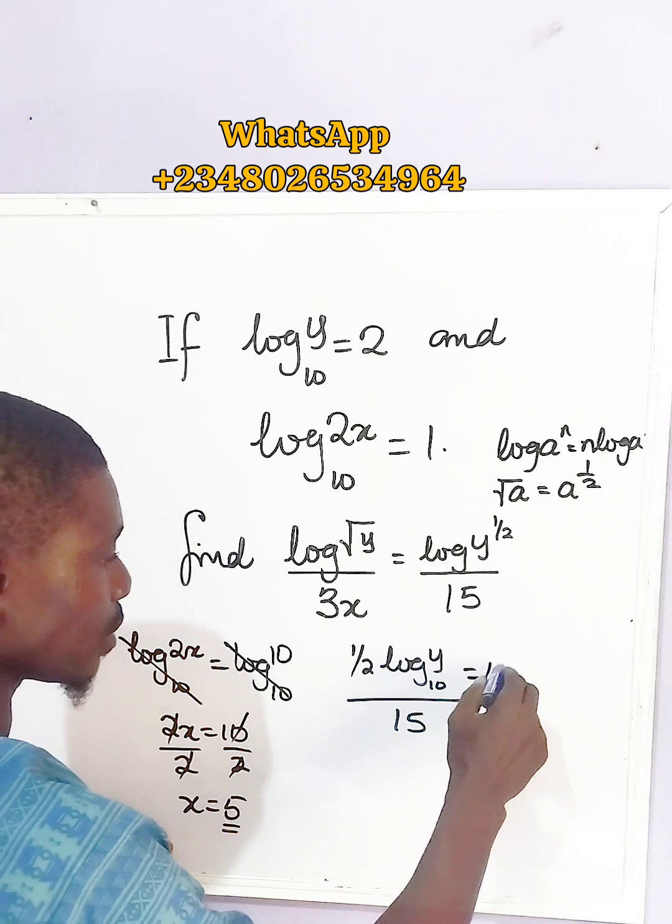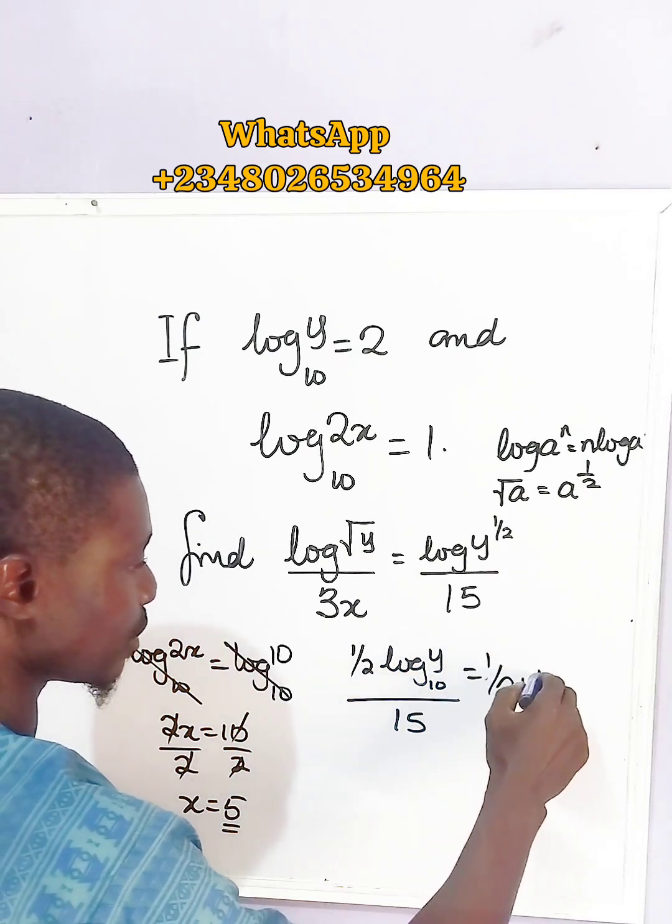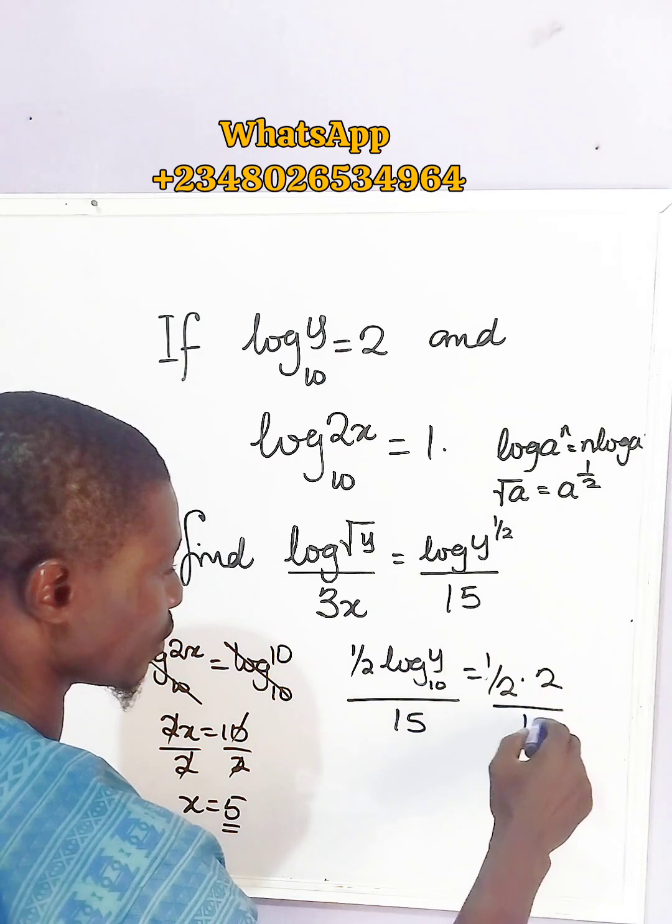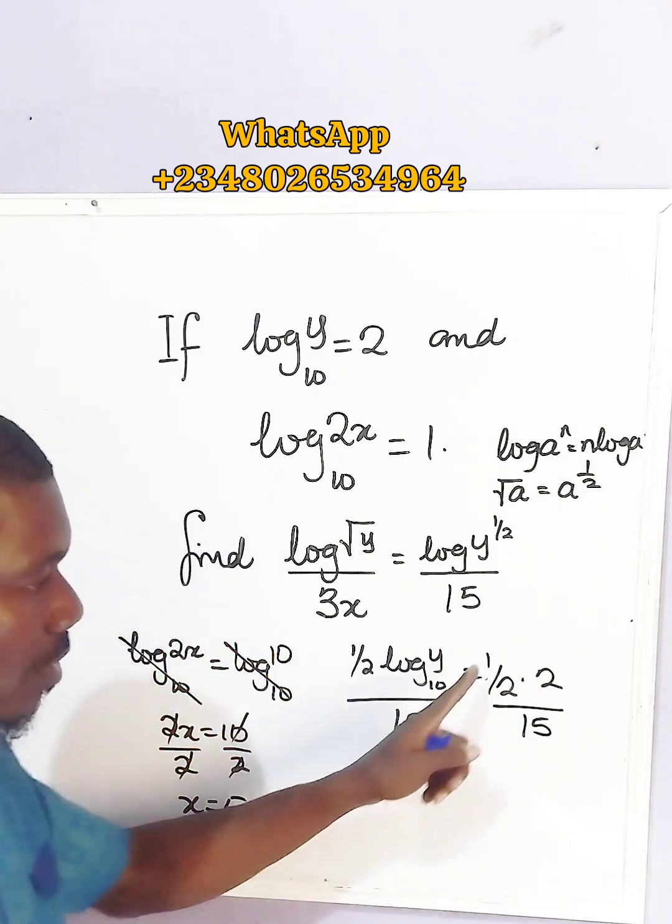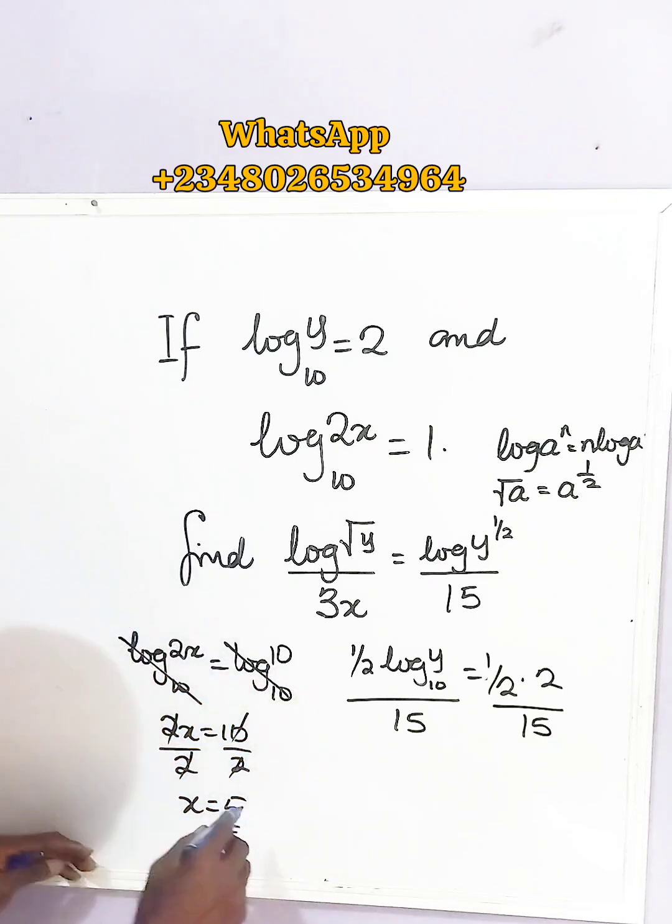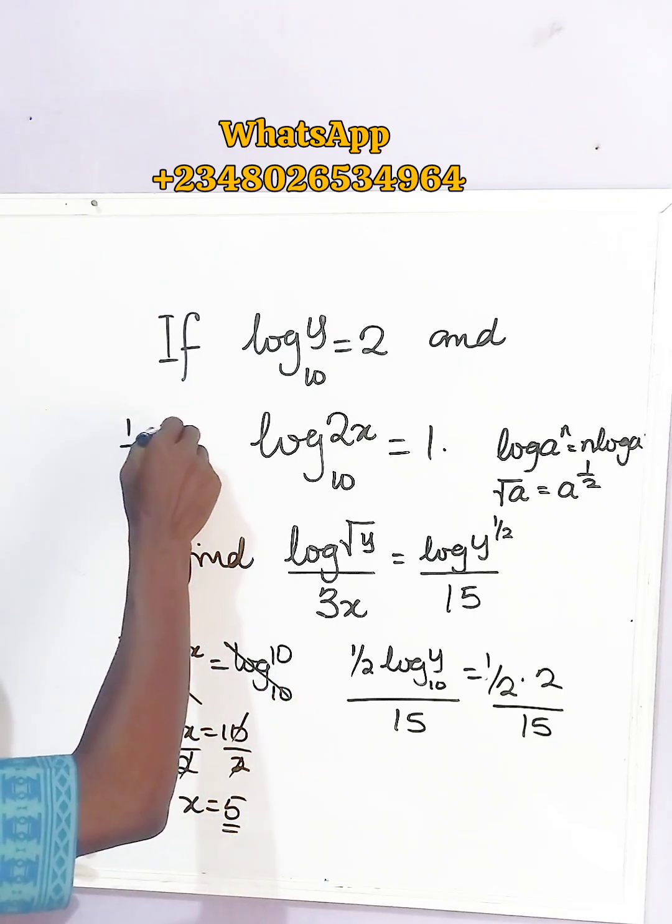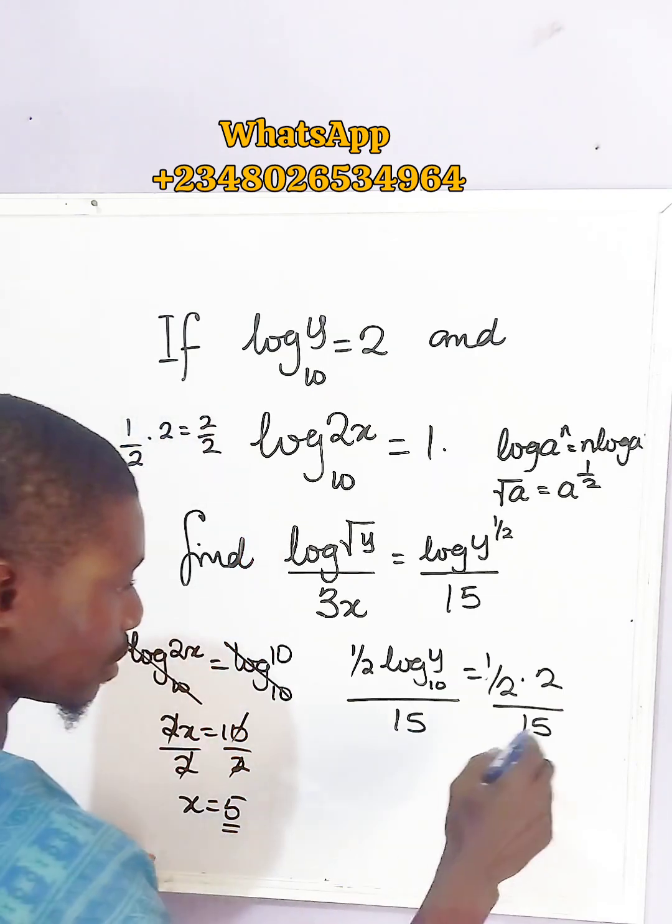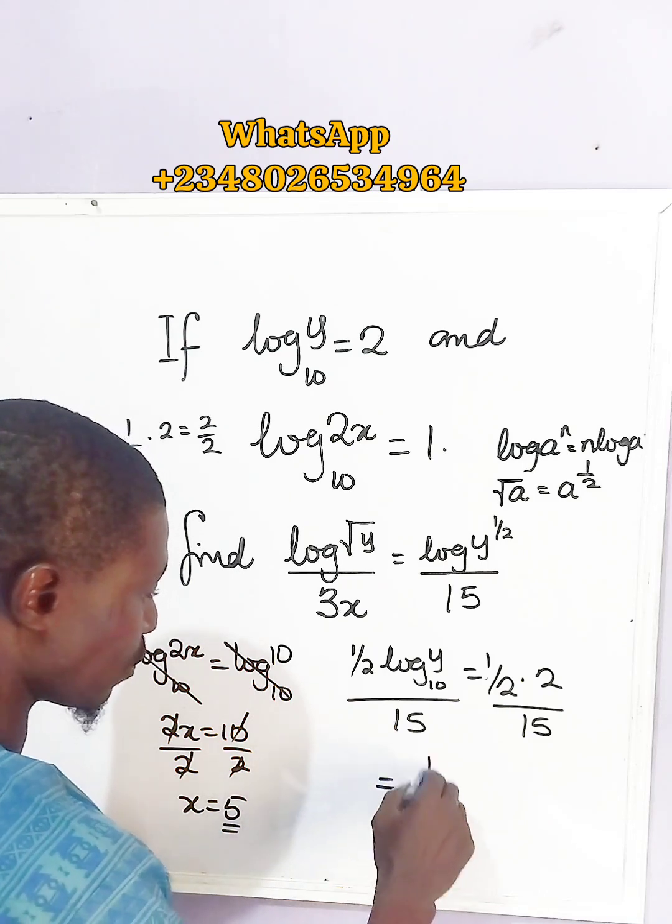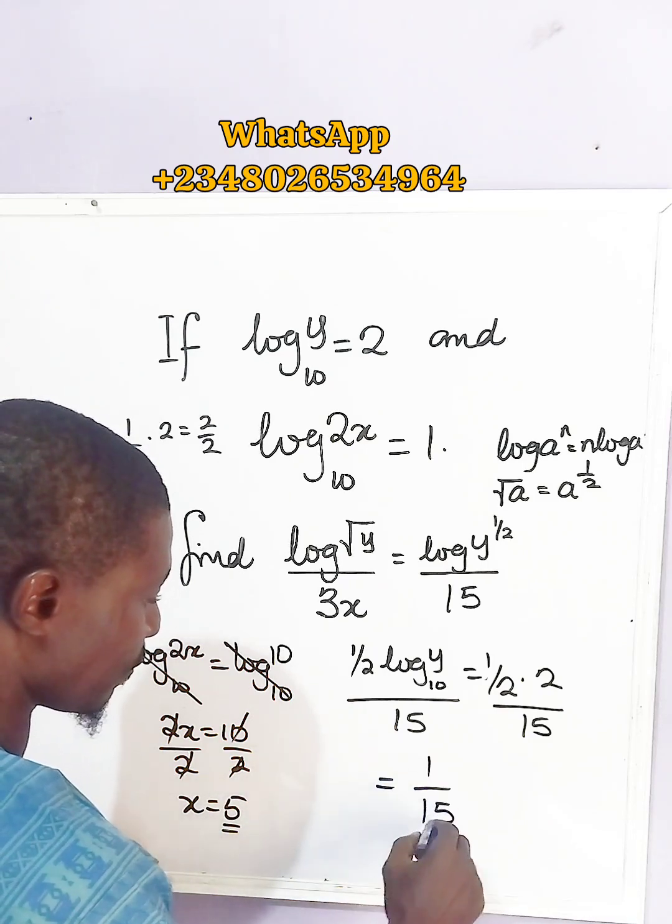So this gives us 1/2 times 2, all over 15. And 1/2 times 2 gives us 2/2 which is 1. So at the end of the day, we have 1/15.